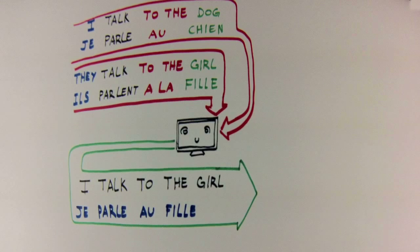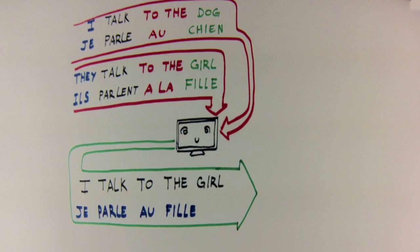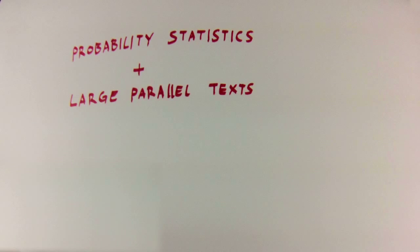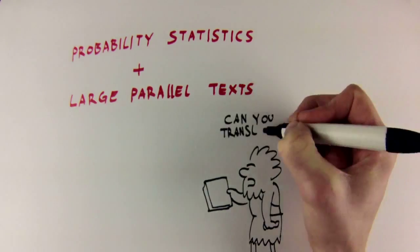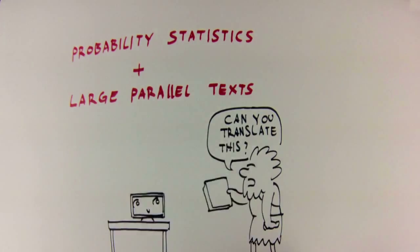This is a very simple example, but when we apply this technique and use probability statistics to learn from large parallel texts, what the computer learns is very powerful and flexible and able to translate very accurately.